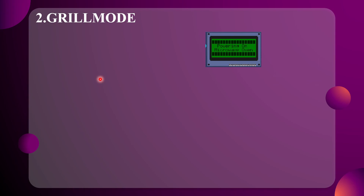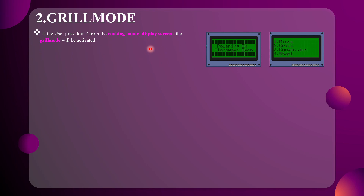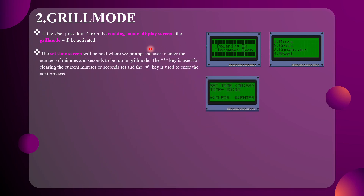Now let's move on to the Grill mode. Initially, the power-on screen appears. The option for Grill mode is key number 2 — if the user presses key 2, the Grill mode will be activated. After this, it goes to the set time screen. Note that the 900 watts power display is shown only in Micro mode.